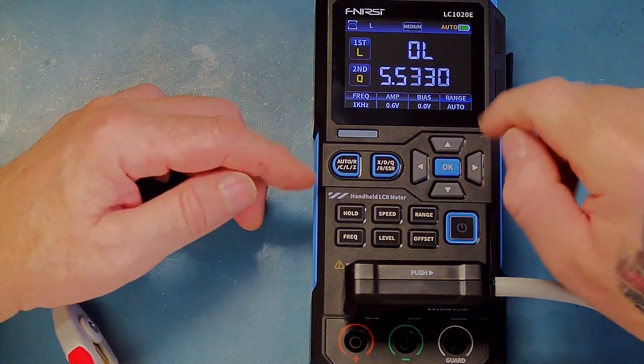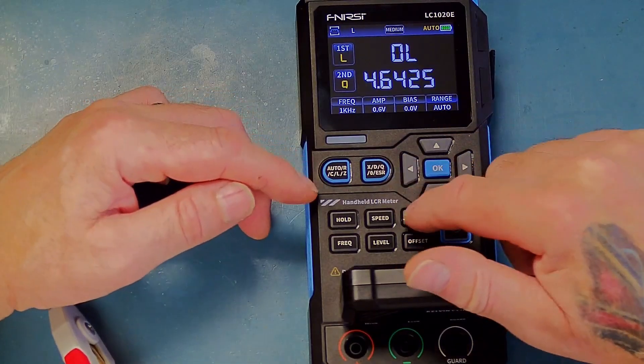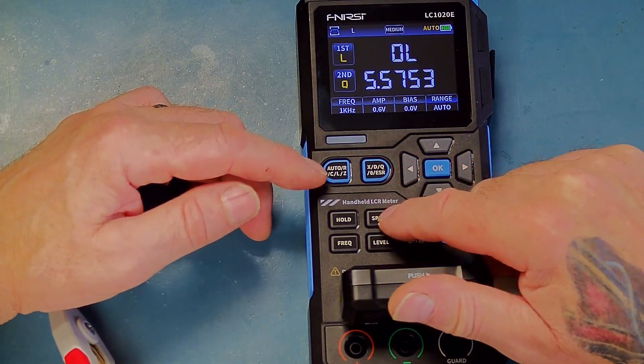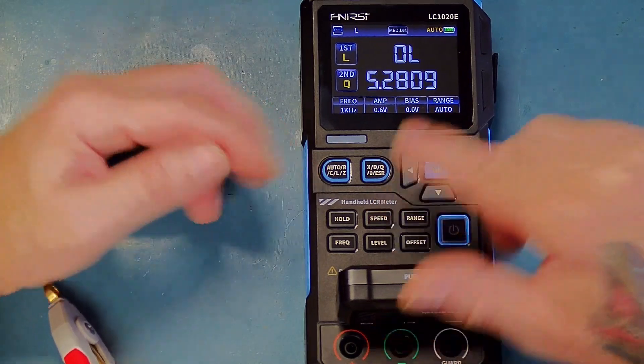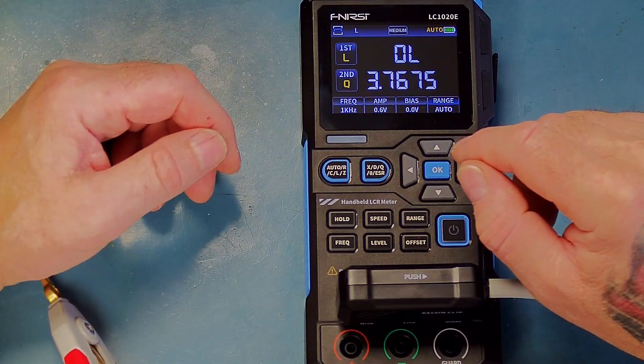I'd like to lock it so it doesn't auto-range, because the secondary display hasn't actually got an auto-range function on it. I don't see why that would auto-range unless you ask it to. That's my opinion—leave comments in the comment section.